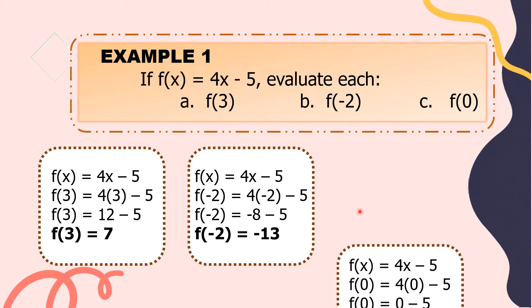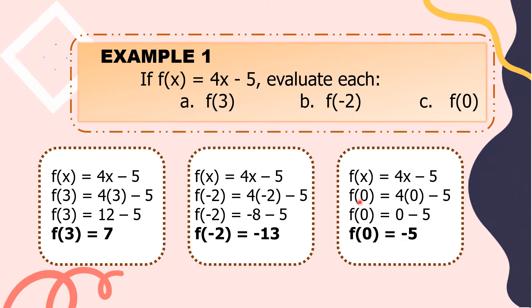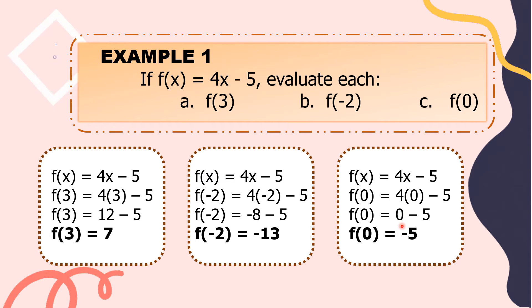For letter C, the value of x is 0. We just change x into 0. So f of 0 equals 4 times 0 minus 5. 4 times 0 is equal to 0; 0 minus 5 is equal to negative 5. So f of 0 is equal to negative 5.